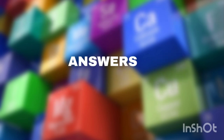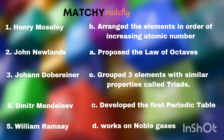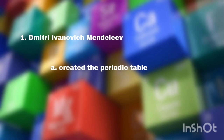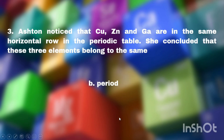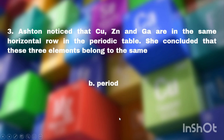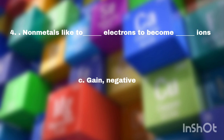Let us have the answers. For the matching activity: Number 1 is letter B. Number 2 is A. Number 3 is E. Number 4 is C. Number 5 is letter D. For the next part: Number 1 is letter A — Dmitri Ivanovich Mendeleev created the periodic table. Number 2 — as you move from the left side to the right side, the elements become letter D, less metallic. Number 3 is letter B. Number 4 is letter C. And number 5 is letter D.